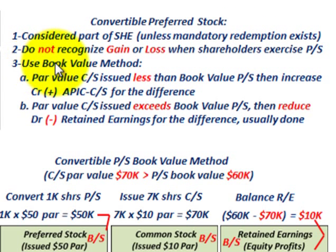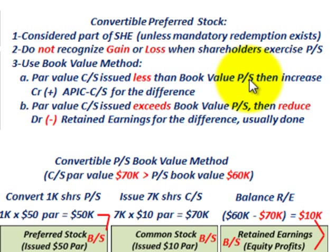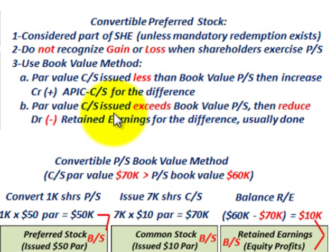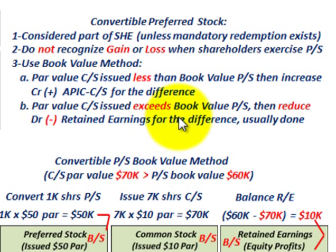Point three: you use the book value method when doing this conversion. There are two cases. Case A is where the par value of the common stock issued is less than the book value of the preferred stock — then you increase or credit your additional paid-in capital for common stock for the difference. Case B: if the par value of the common stock issued exceeds the book value of the preferred stock, then you reduce — debit — your retained earnings for the difference.